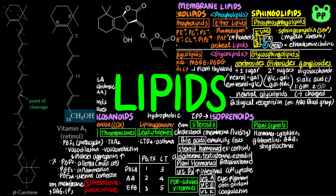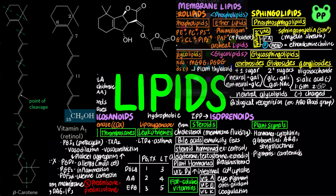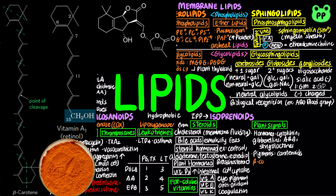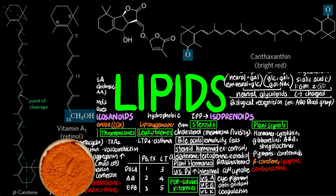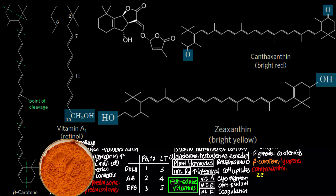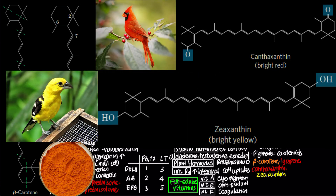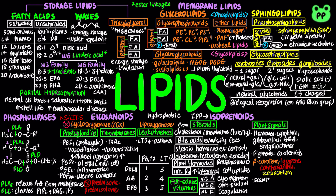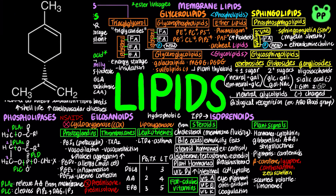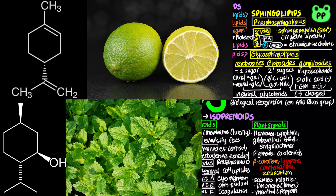Both vitamin A and strigolactones can be synthesized from beta-carotene, an orange pigment belonging to the carotenoid family. Other types of carotenoids include the red pigments lycopene and canthaxanthin, and the yellow pigment zeaxanthin. Birds acquire red and yellow feathers from eating plants containing lycopene and zeaxanthin. Several scented volatile compounds are also isoprenoids, including limonene from limes and menthol from peppermint.